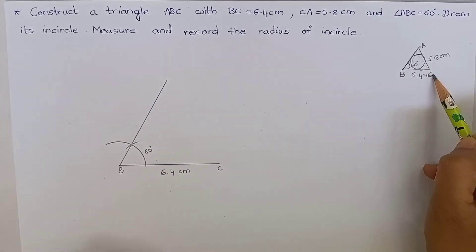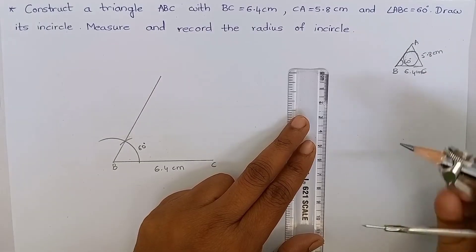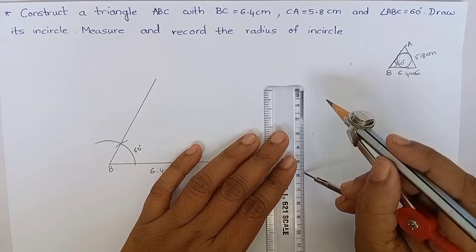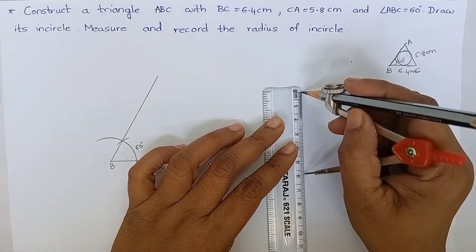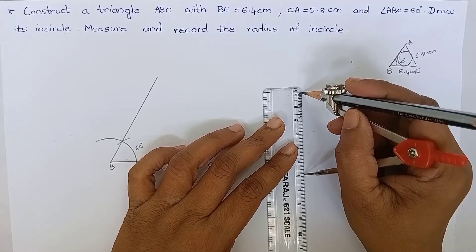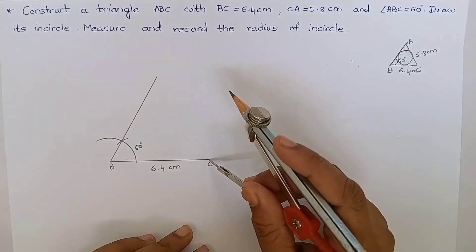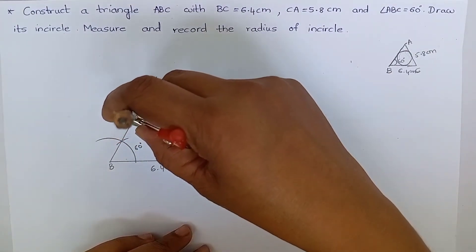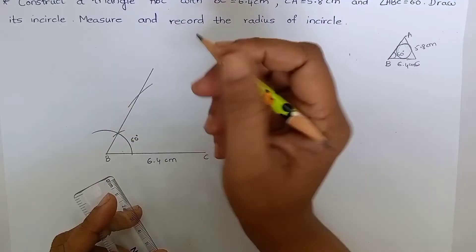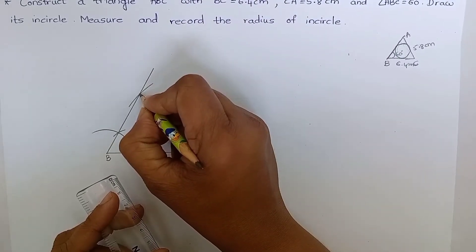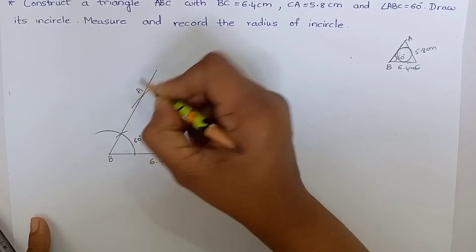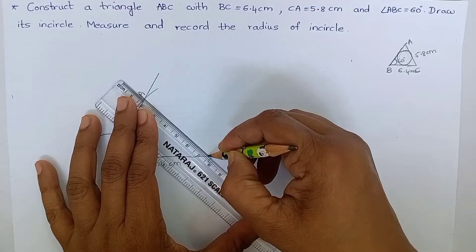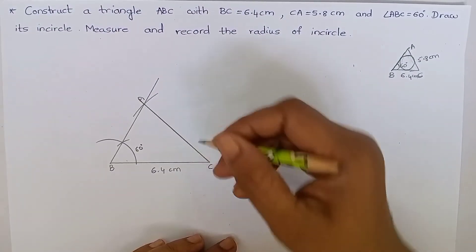AC is 5.8 cm. Mark 5.8 cm using compass and ruler. You can see that it is 5.8 cm. Keep your compass at point C and cut an arc. Name this point as A and join AC. AC is 5.8 cm.